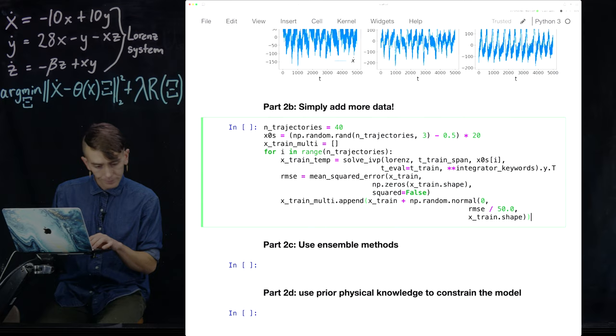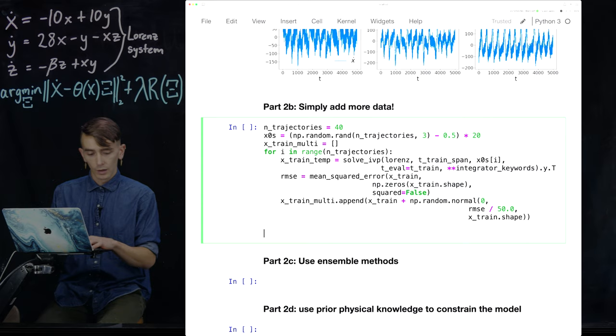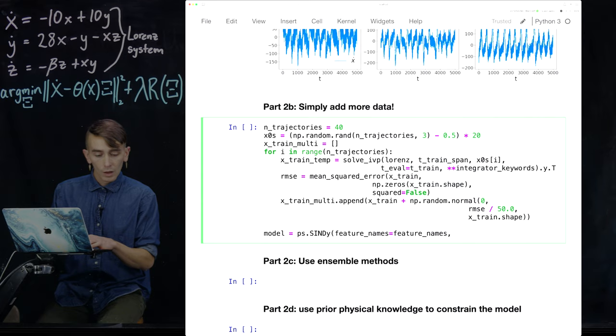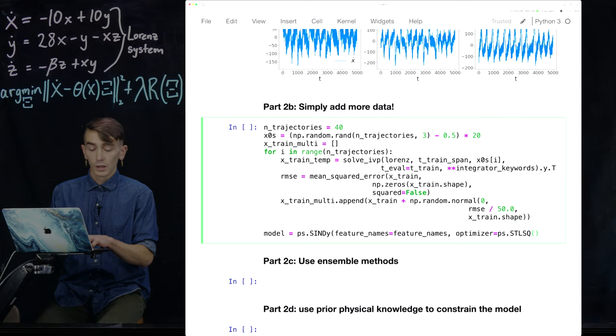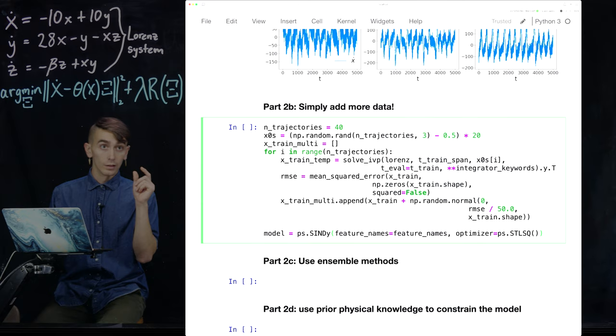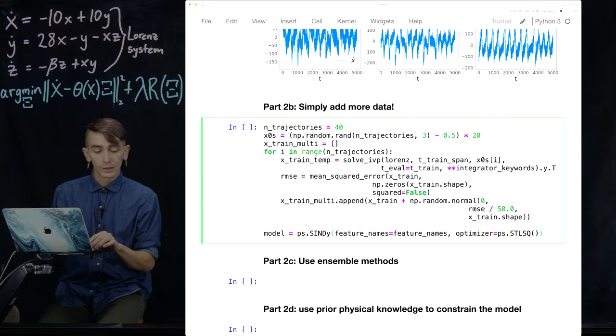And I think that's it for the for loop. And now we just say model is ps dot SINDy. We're going to again, name those feature names from before just so it calls everything X, Y, Z, which is nice for our system. Optimizer, just use a simple sequentially threshold least squares. If I don't specify the threshold, the lambda actually just defaults to 0.1, which for Lorenz is quite convenient. So we're just going to leave it there.